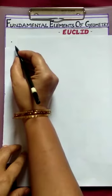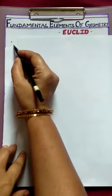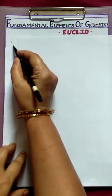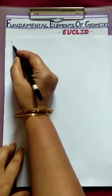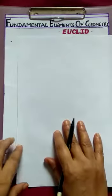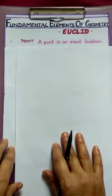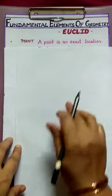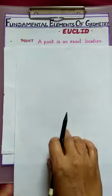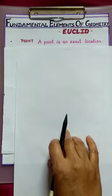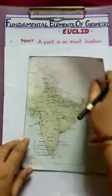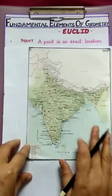Children, you observe here. I put a dot on a paper. What can we call this? The dot on this surface gives us an idea of a point. So a point is an exact location. So where do we use the point?